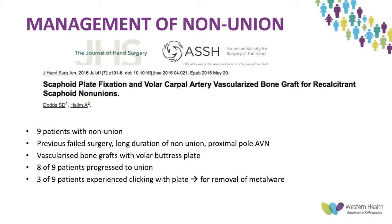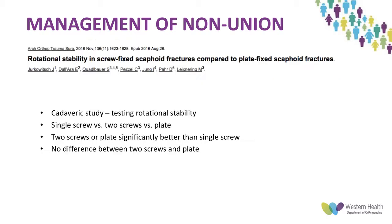Another article in the same journal looked at scaphoid plate fixation with vascularized bone graft for difficult non-unions: nine patients with previously failed surgery, average non-union duration of about 15 months, some with proximal pole avascular necrosis. Using vascularized bone grafts with a volar buttress plate, eight of the nine patients progressed to union, though three reported clicking and subsequently required metal removal. A cadaveric study on rotational stability found that two screws or a plate provided significantly better rotational stability than a single screw, with no difference between two screws versus a plate.